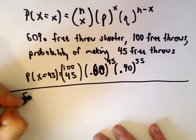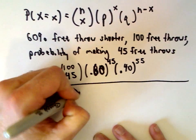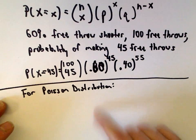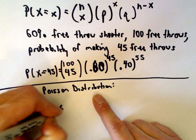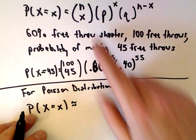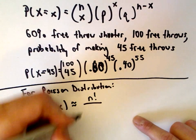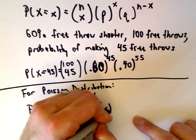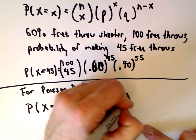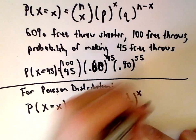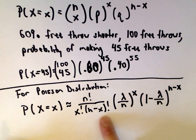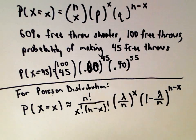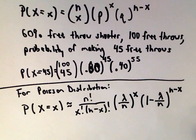For the Poisson distribution, we can approximate the probability of getting x successes as n choose x — which is n factorial over x factorial times n minus x factorial — multiplied by lambda over n raised to the x power, times 1 minus lambda over n raised to the n minus x power. Now we're going to eventually simplify this to justify that it turns into the original Poisson formula.